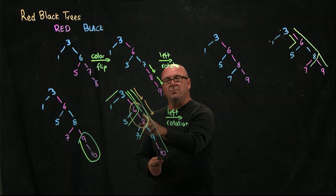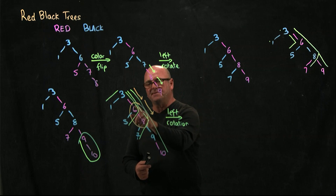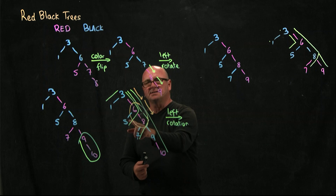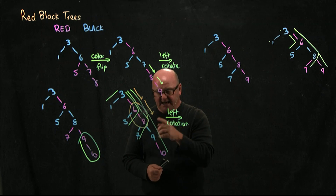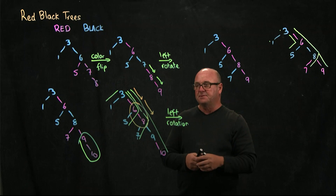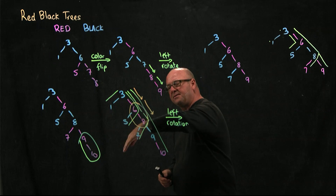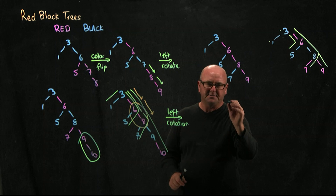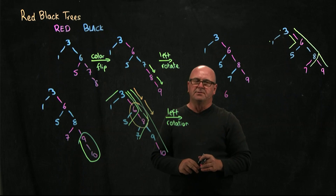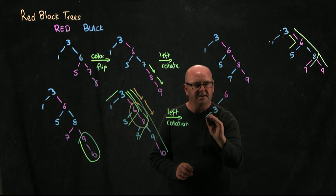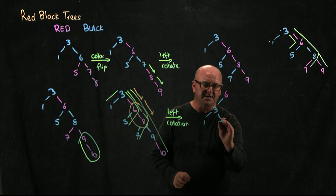The only difference is at what point do we do the rotation. For red-black trees, we do that when we have a violation either of the number of blacks or of the number of adjacent reds. So here we have the imbalance between the 6 and the 8, so we do a rotation. We're going to do a left rotation, bringing the 3 down to be the 6's left child.